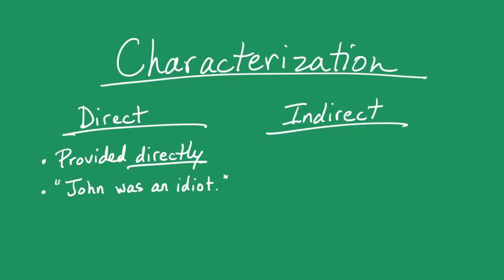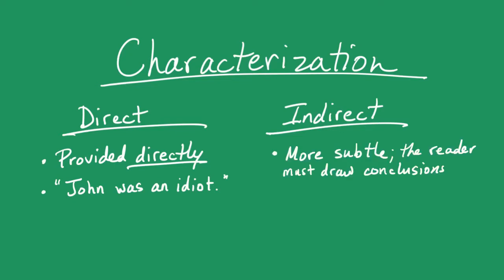Indirect characterization is different. It's more subtle. The reader has to draw conclusions for themselves about characters. What do we draw these conclusions based on? Some of it will be based on the actions those characters perform. Other times it will be from dialogue, the things those characters say. And at other times you're going to have to look at the tone that the narrator uses when describing those characters. Is it a positive tone? Is it a negative tone? Is it admiring? Is it condemning? What kind of tone is the author establishing about those characters?